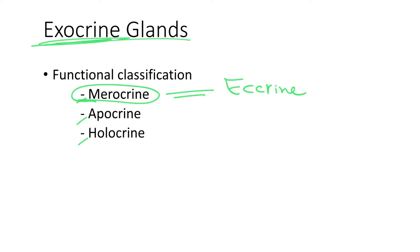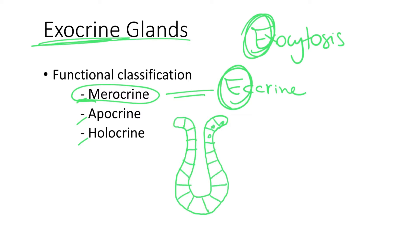The merocrine gland is the one that releases the secretion via exocytosis. So you remember, exocytosis, ecrine gland, which is the same thing as merocrine gland. So if we go ahead and we draw a gland, and we pay attention to how cells in this gland are releasing their secretion.